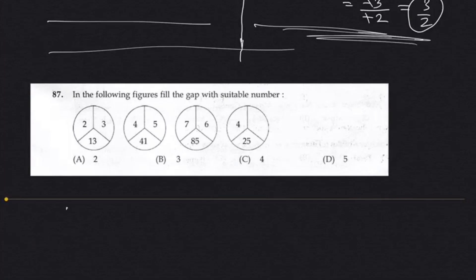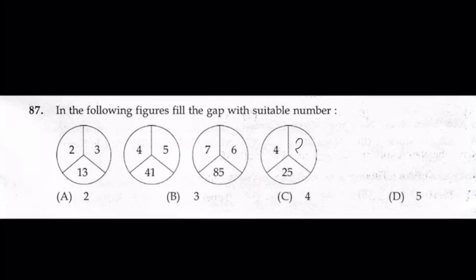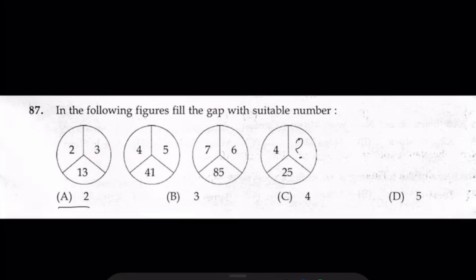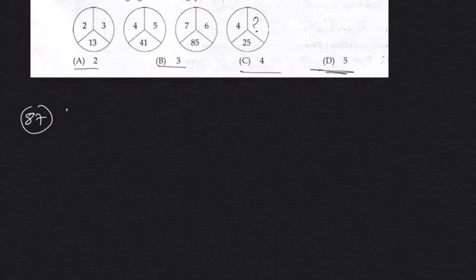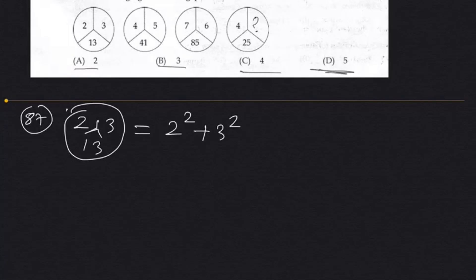Question 87. In the following figures, fill the gap with a suitable number. We have to fill up this blank. So we have 2, 3 giving 13 — the relation is 2 squared plus 3 squared equals 4 plus 9 equals 13. Then 4, 5 gives 41: 4 squared plus 5 squared equals 16 plus 25 equals 41.